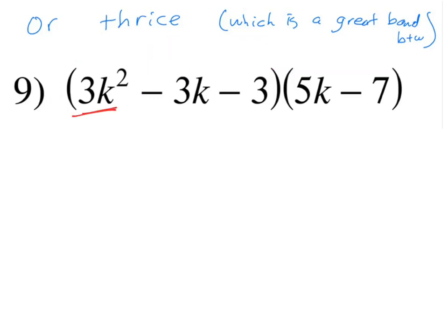We got 3k squared times 5k and times by negative 7. Let's do the times by 5k part. 3 times 5 is 15. 3k squared times k is going to give you k to the third. And now we have to do 3k squared times negative 7. 3 times negative 7 gives you negative 21. And then the k squared didn't have any other k's to multiply with, so it stays as k squared.